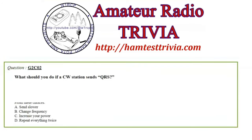Question number 2: What should you do if a CW station sends QRS? From these choices: A) Send slower, B) Change frequency, C) Increase your power, or D) Repeat everything twice. QRS — if you do CW and you've started CW, you probably already know what that means. It means send slower.